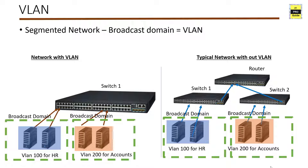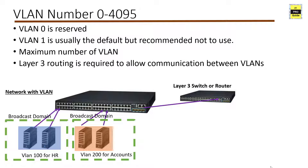A VLAN acts as a single LAN — it makes up a segment, which means it is a broadcast domain of that VLAN. VLANs are identified by a VLAN ID, which is a number between 0 and 4095. The default VLAN ID on any network is VLAN 1.